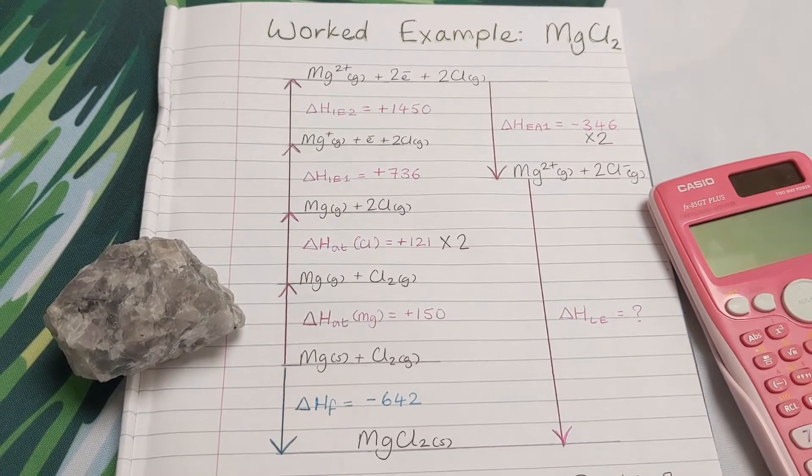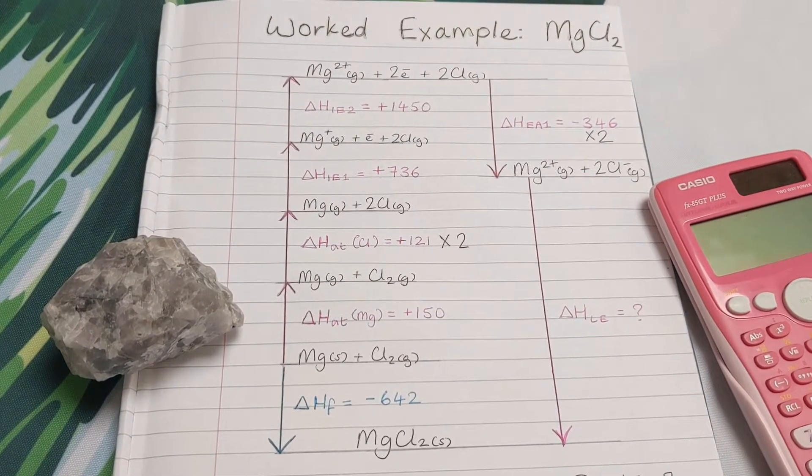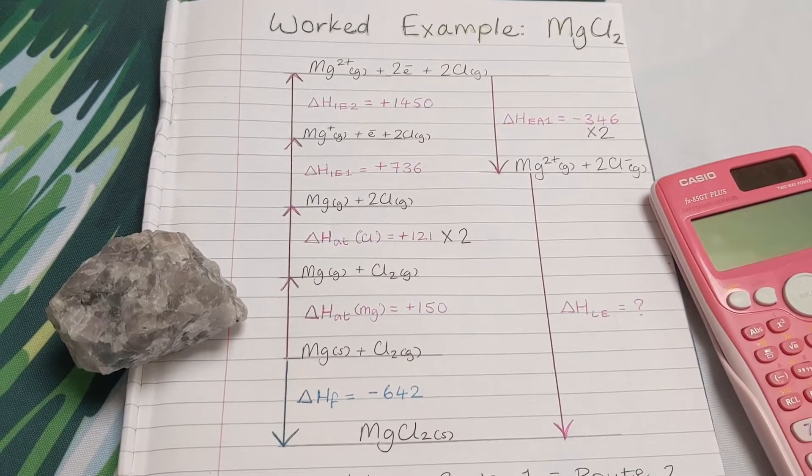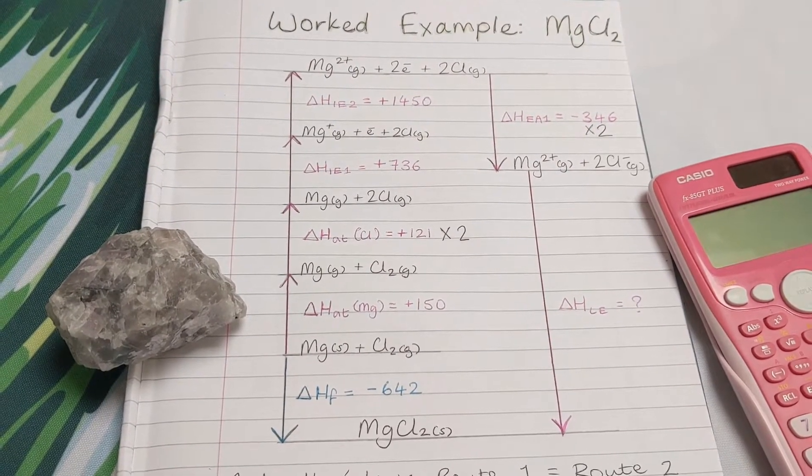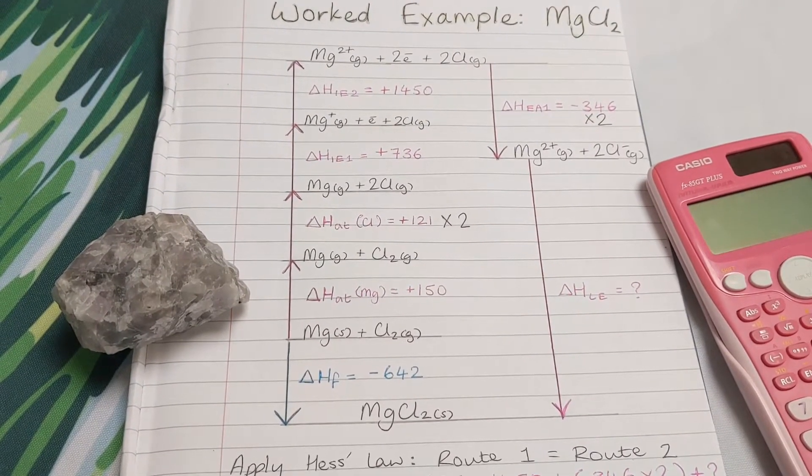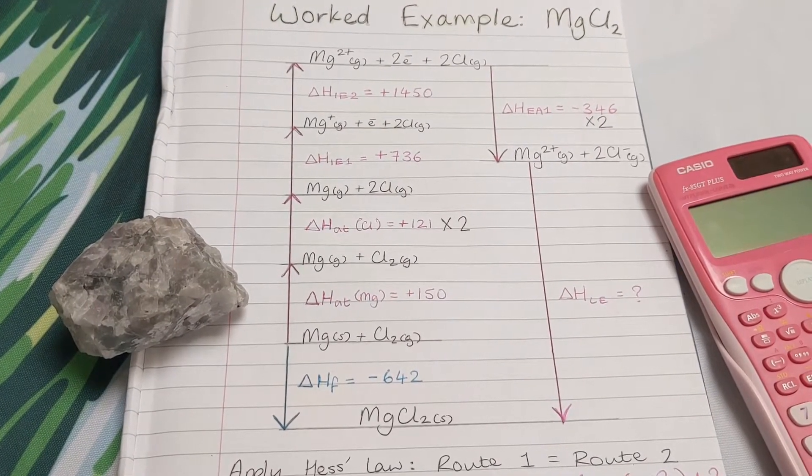If you've just watched the NaCl example, the sodium chloride one, that was the simplest example. This one is the next one up where we've got a 2 plus metal ion and a 1 minus non-metal ion, so we've got one extra step in the cycle.